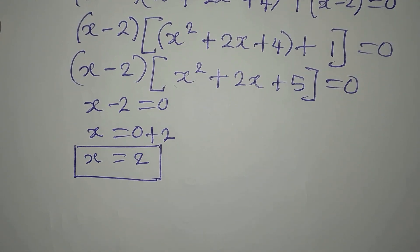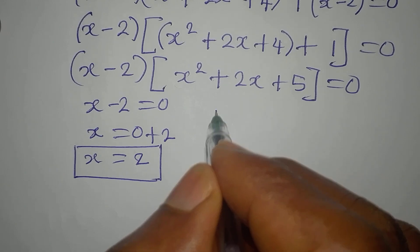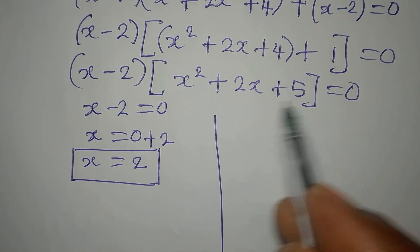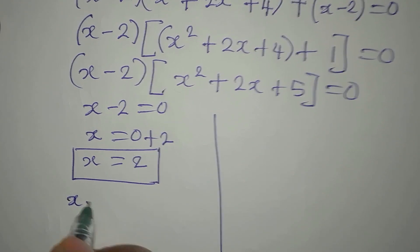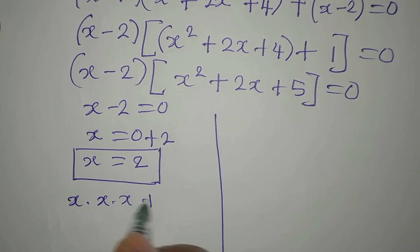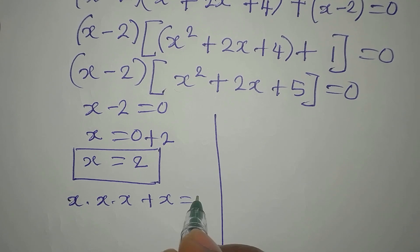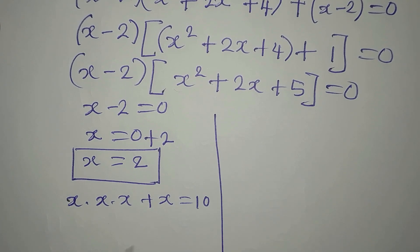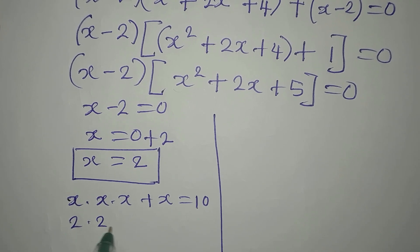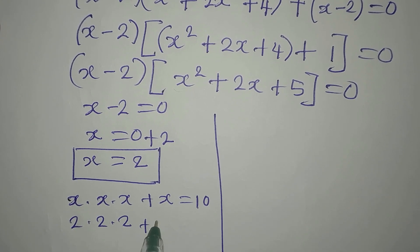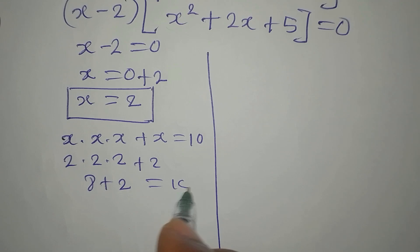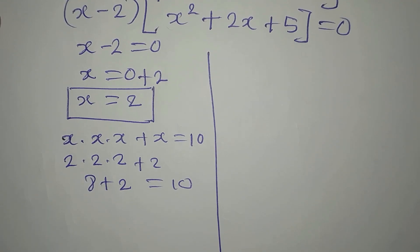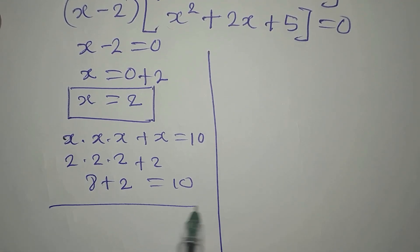Let's confirm: X times X times X plus X equals 10. Putting in X equals 2: 2 times 2 times 2 plus 2 equals 8 plus 2, which is 10. Correct!